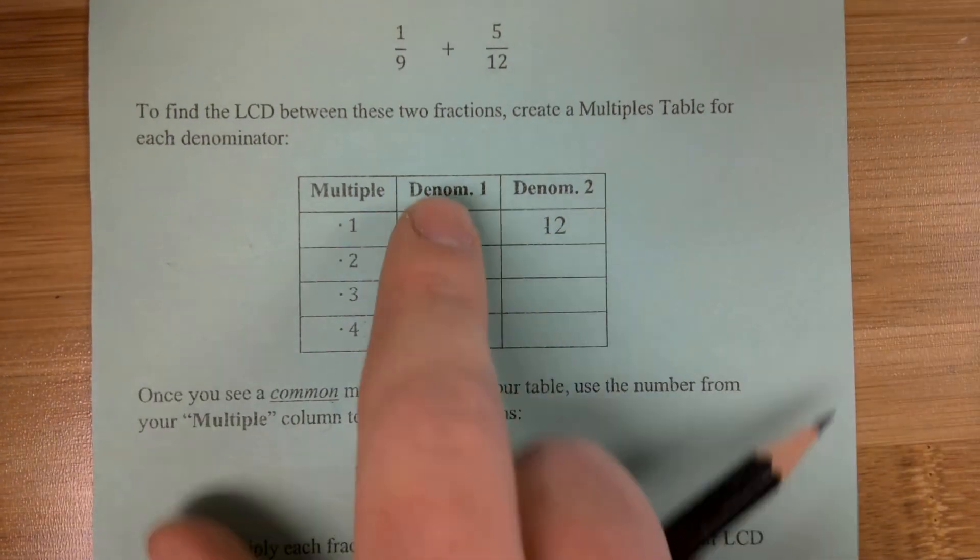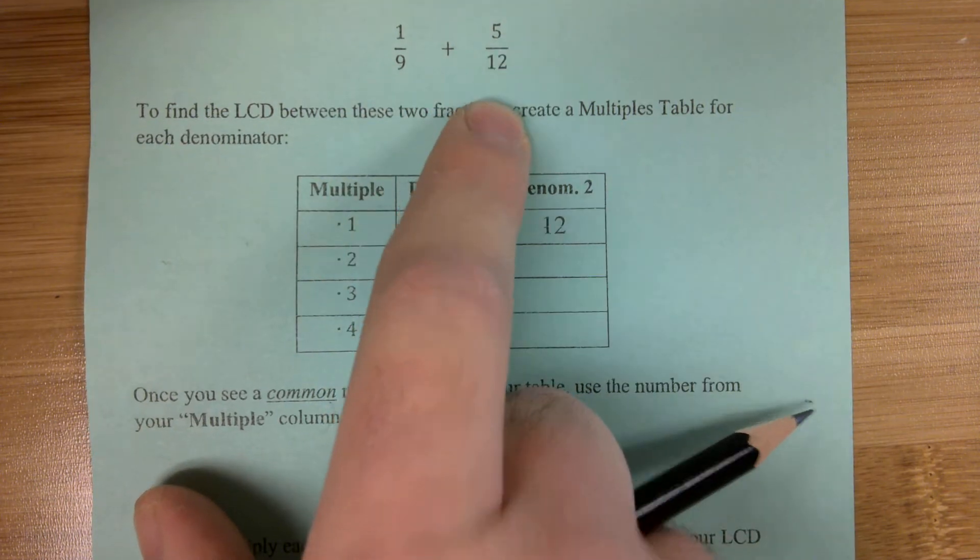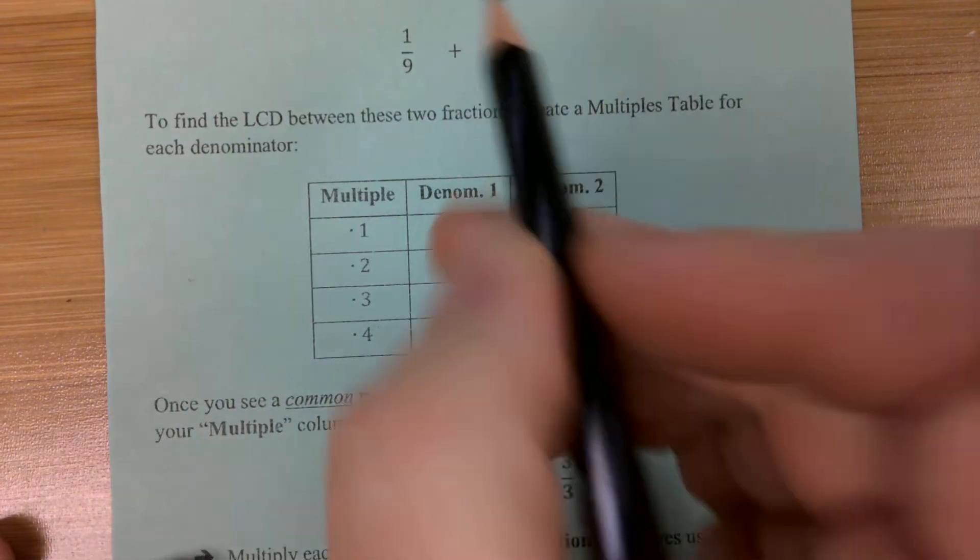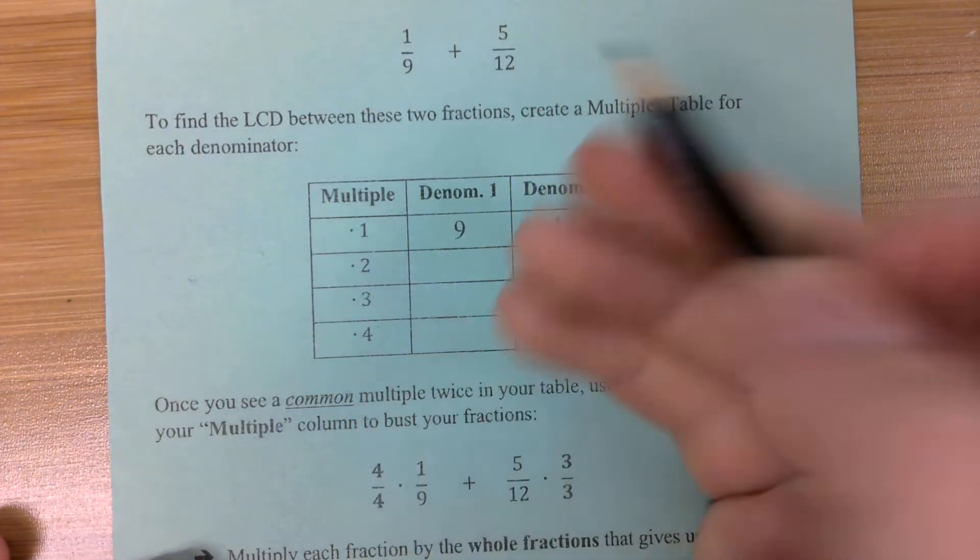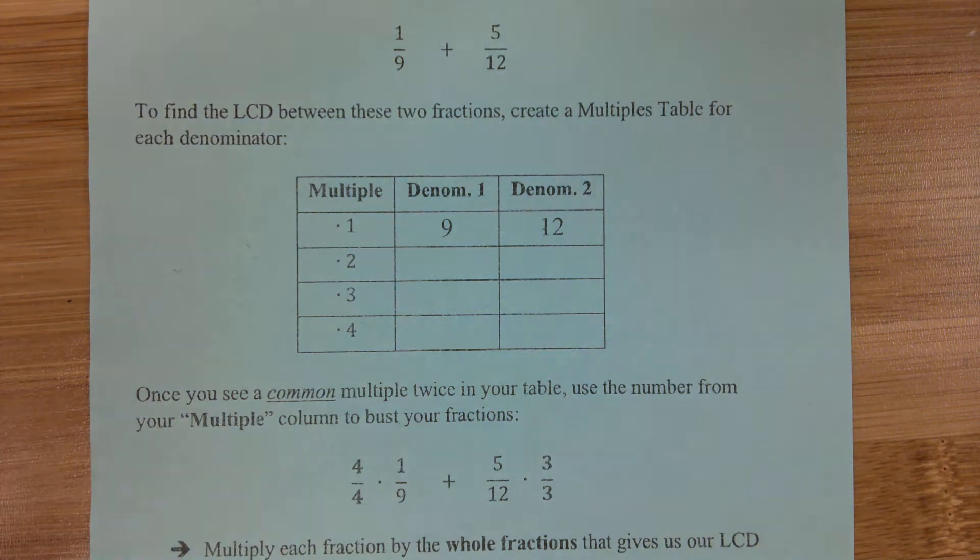So, the expression that we have here is 1 over 9 plus 5 over 12. Now, if we were multiplying these fractions, we could just multiply the numbers across. But since we're adding them, we need to have the same denominator. So here's how we're going to find it.